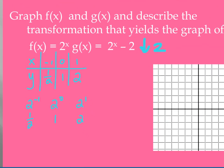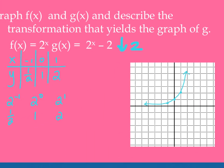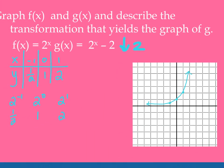And then I can plot those three points. So negative 1, 1 half, 0, 1, 1, 2. I know my exponential function will bottom out around the axis and then increase as it passed x being 1.